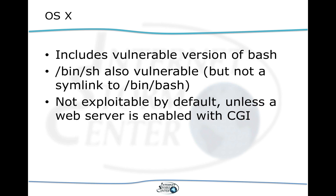A somewhat larger problem is OS X. OS X includes a vulnerable version of bash, and /bin/sh is not a symlink to bash — it's its own binary on OS X, but it's really just a slightly modified version of bash. So both /bin/sh and /bin/bash are vulnerable. By default there is no web server running on OS X, and the DHCP vector that works on Linux does not work to attack OS X. But it's very common for people to install web servers on OS X, and if you installed additional copies of bash from third-party packages like MacPorts or Homebrew, you may have installed additional vulnerable versions.